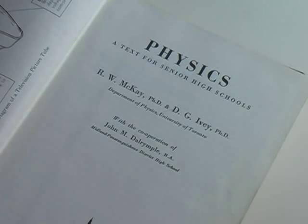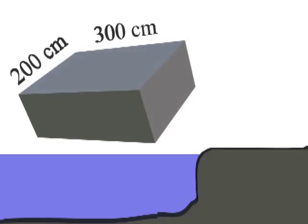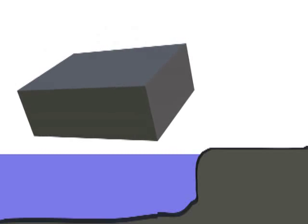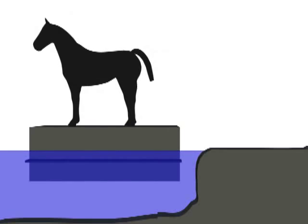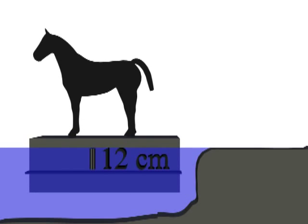When first studying physics many years ago, our instructor posed this question. A rectangular barge, 300 centimeters long and 200 centimeters wide, floats at the edge of a freshwater lake. A horse jumps into the barge, and the barge sinks 12 centimeters. How much does the horse weigh?